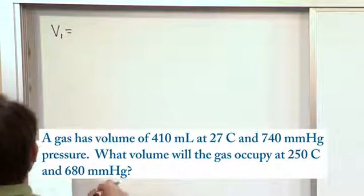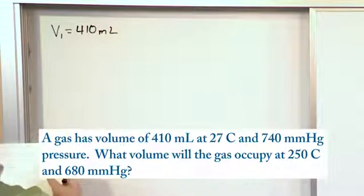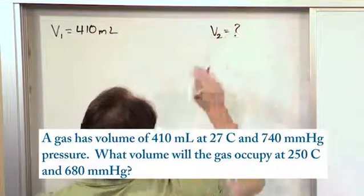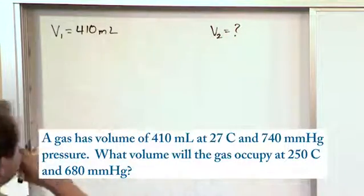So V1, the initial volume, it says here is 410 milliliters. And it says that the final volume, V2, is what we're trying to find. It says right here, what volume will the gas occupy, blah blah blah. So that's the final volume we want.